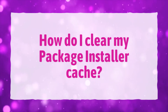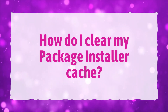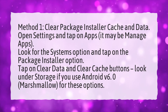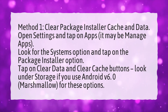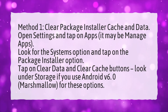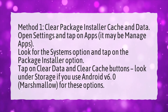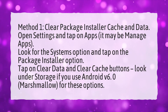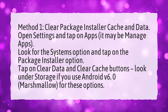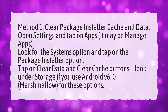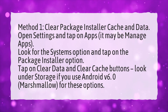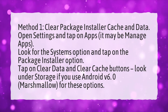How do I clear my Package Installer cache? Method 1: Clear Package Installer Cache and Data. Open Settings and tap on Apps — it may be listed as Manage Apps. Look for the Systems option and tap on the Package Installer option. Tap on Clear Data and Clear Cache buttons. Look under Storage if you use Android 6.0 Marshmallow for these options.